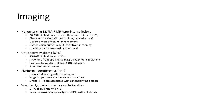Optic pathway glioma occurs in 15% of children with neurofibromatosis type 1. These can arise anywhere from the optic nerve through the optic radiations, fusiform to globular in shape, with possible optic nerve tortuosity and plus or minus contrast enhancement.